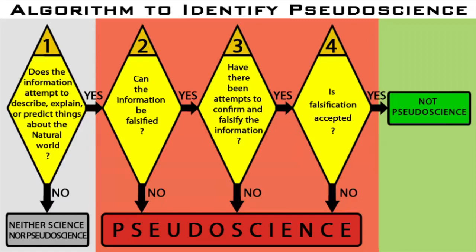The third question is: have there been attempts to confirm and falsify the information? Attempting to confirm the information covers the criterion of verifiability.